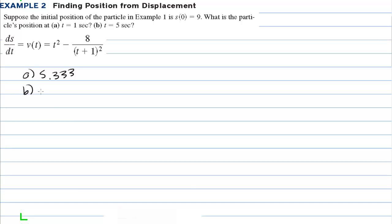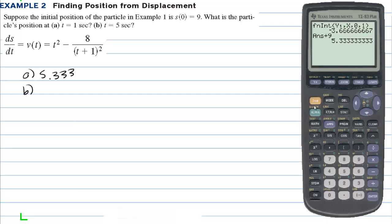On letter B, we're going from 0 to 5 seconds. So I can go 2nd, entry twice, and change this from 0 to 1 to 0 to 5. There's the displacement. The displacement is 35, but again, we started at 9, not at 0. So we need to add 9 to this. So the answer to letter B is 44.